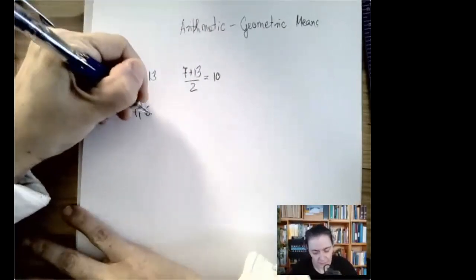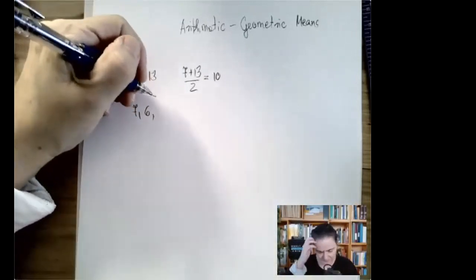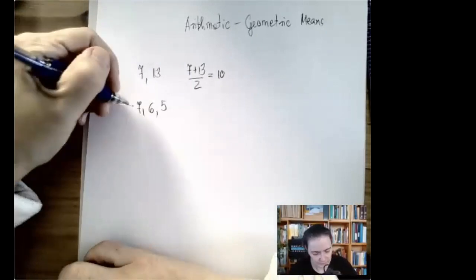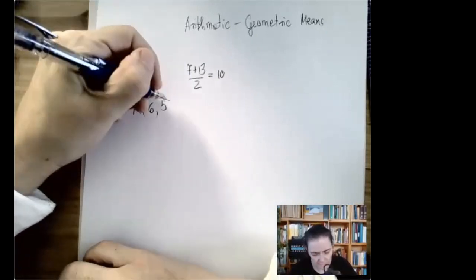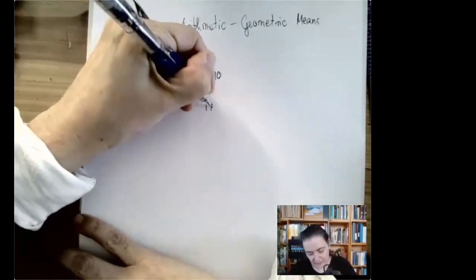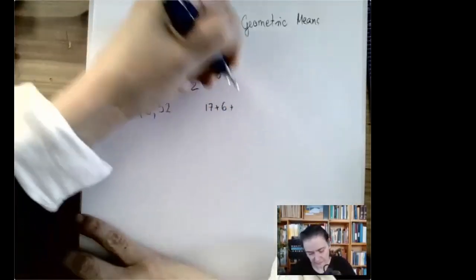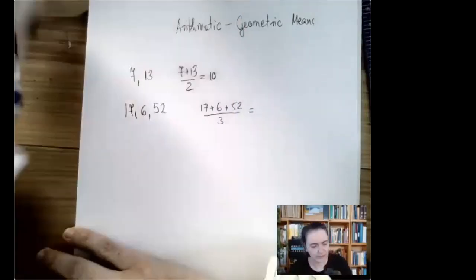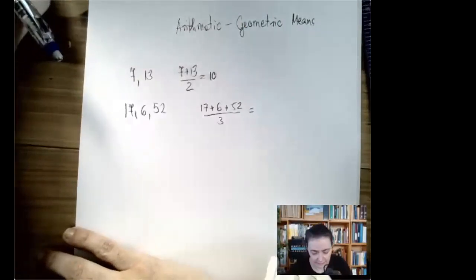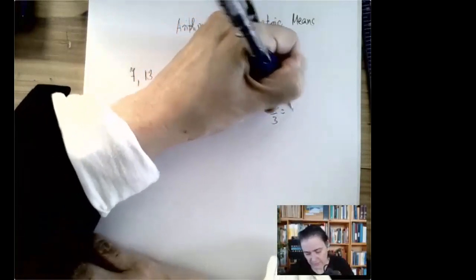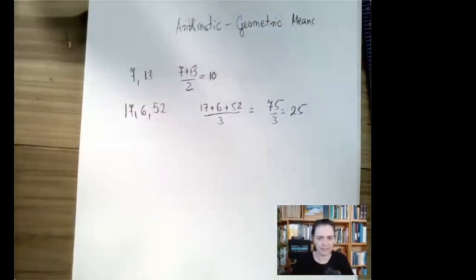You can do that with three numbers as well — you add them and then divide by the number of numbers that were added. For instance, with three numbers the result would be something like 75 divided by the count.